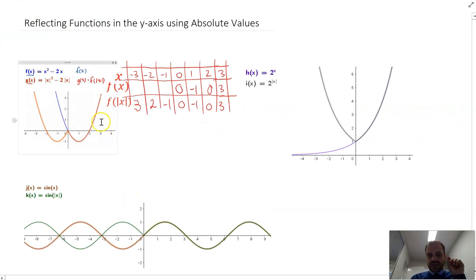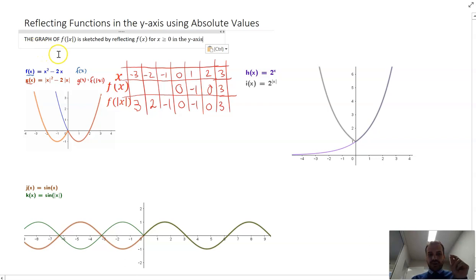Okay, so you can see that we are reflecting functions in the y-axis, sort of. Now, we'll just write something really neat and succinct here. The graph of f of the absolute value of x is sketched by reflecting f of x for x is greater than or equal to 0 in the y-axis. So we're taking that positive direction, and then we're reflecting that in the y-axis. That is it.